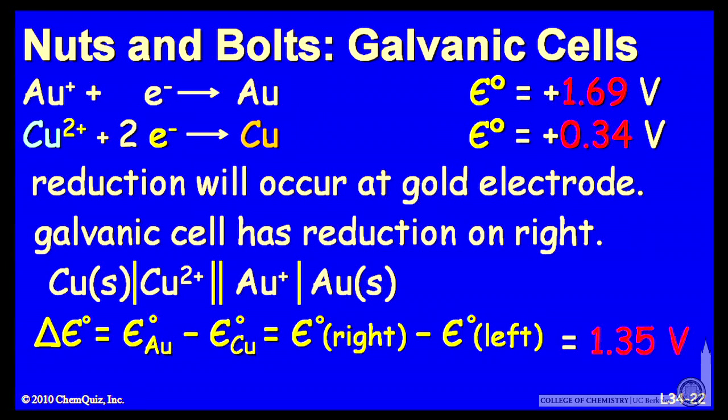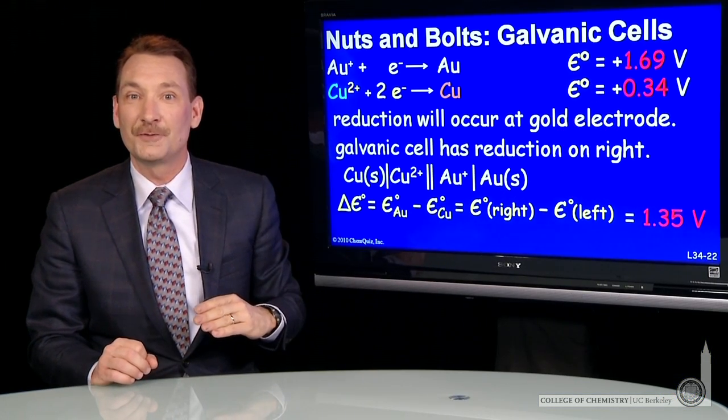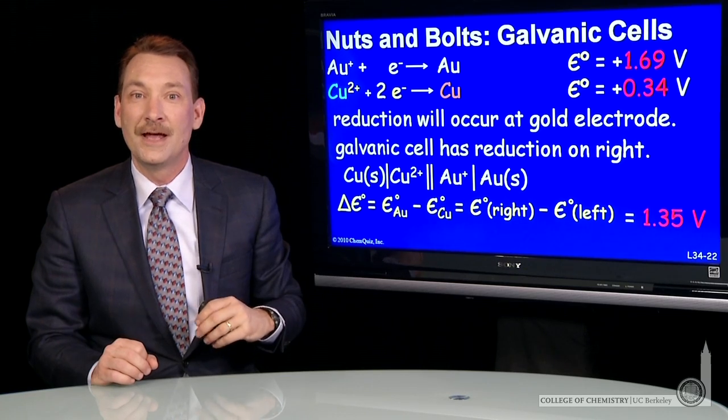Then I calculate the overall potential by the difference between the right and the left, or the cathode and the anode. And in this case, that difference is 1.35 volts. Fairly simple subtraction to do there. Now, let's look at the overall chemical reaction.